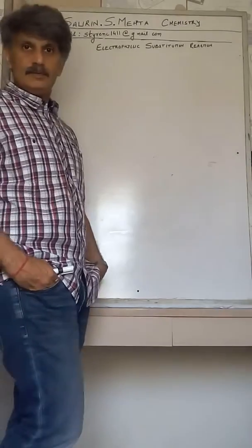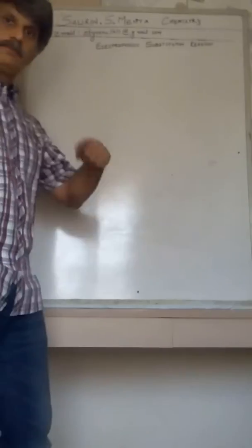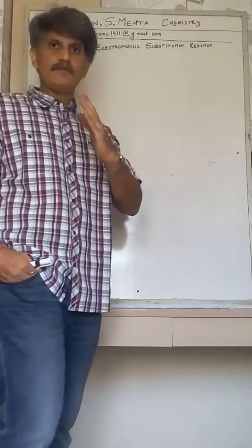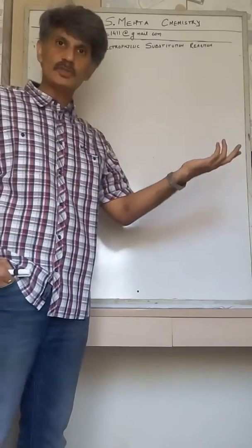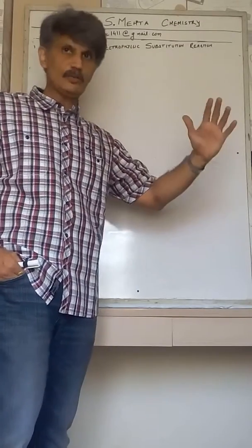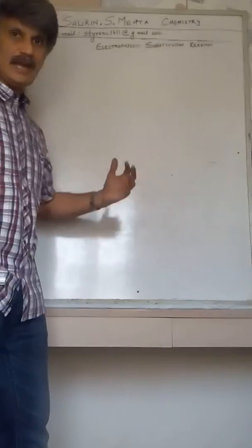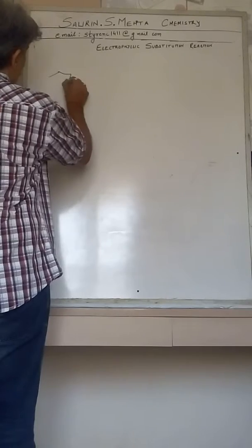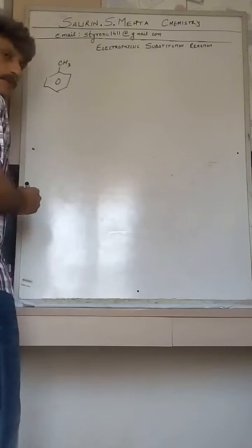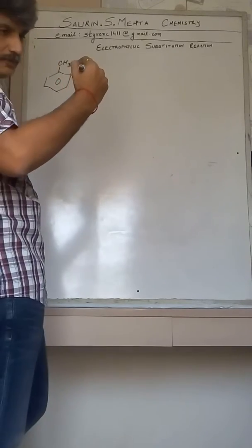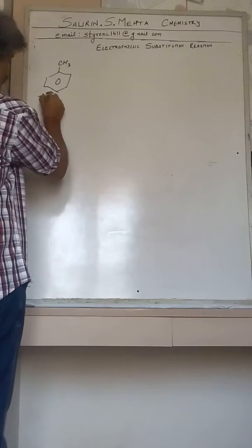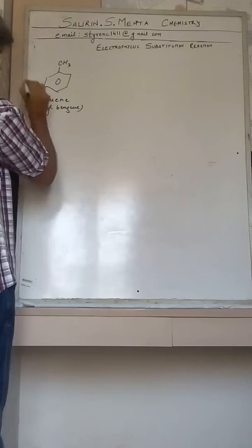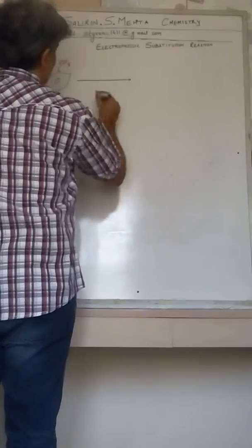I'll first take the nitration reaction of toluene. In the previous episode you have come across the nitration reaction of benzene, so before you carry on your studies here I would ask you to first refer to that episode so that all the detailed mechanisms are clear. When CH₃ is bonded on the benzene ring — that is, one edge of benzene is replaced by CH₃ — the compound is known as toluene or methyl benzene.